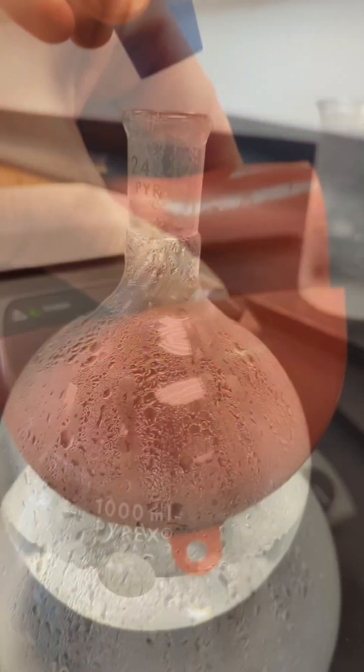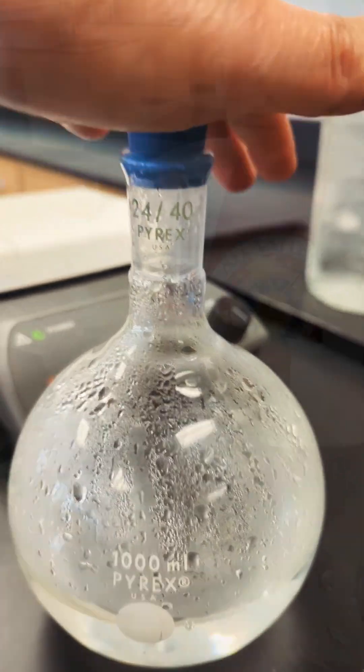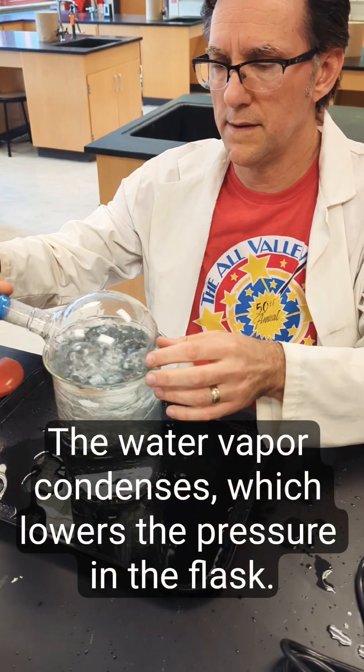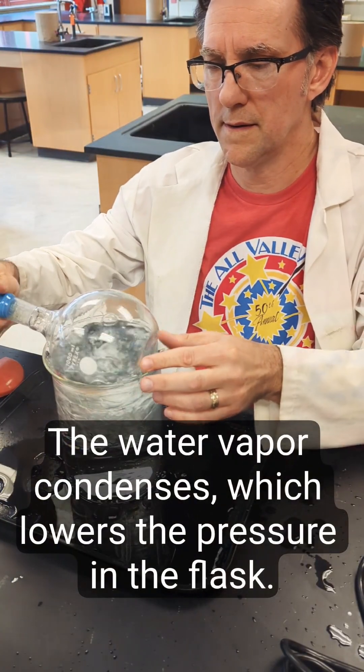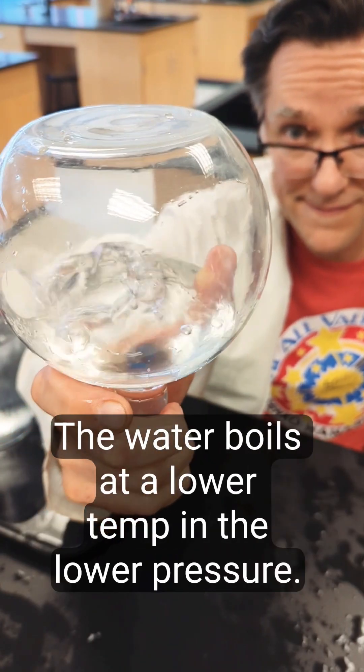So let me show you what I did here. I put a stopper on the flask right after I took it off the hot plate, and then by plunging the flask in ice water, I not only drop the temperature of the water but I condensed the trapped water vapor, dropping the pressure in the flask.